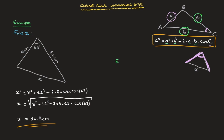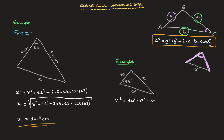Let's quickly work through one more example. We have a triangle where this angle is 84 degrees, this side length is 10, this side length is 19, and we need to find this side length x. Looking at this triangle, we notice that we have the other two side lengths — 19 and 10 — and we have the angle in between them. So we can use the cosine rule. We state that x squared equals 10 squared plus 19 squared minus two times 10 times 19 times cosine of 84.